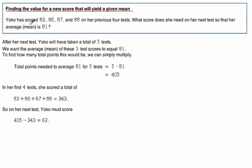So in this case, Yoko scored 82, 86, 87, and 88 on four tests. She's got one coming up and she wants to know what she needs to get in order for her overall average or mean to be 81. So if you think about it, what we've got is a, we're going to have a total of five tests, right? But she's only taken four of them.